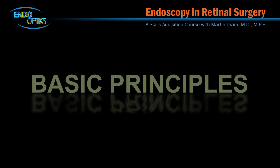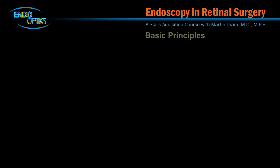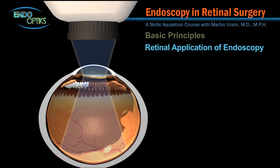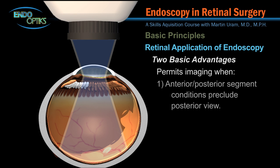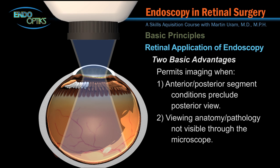Now let's consider some advantages associated with endoscopic retinal surgery. One might argue that the operating microscope view is all that is required for monitoring vitreoretinal surgery. However, the benefits of endoscopy are more apparent when anterior segment conditions do not permit a posterior view, or when attempting to view anatomy that is difficult or impossible to see — specifically the peripheral retina, pars plana, ciliary body, ciliary sulcus, and posterior iris regions.